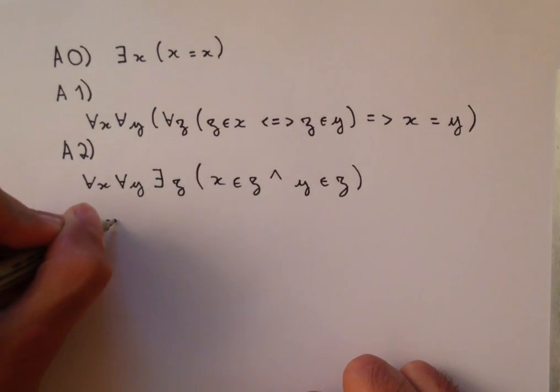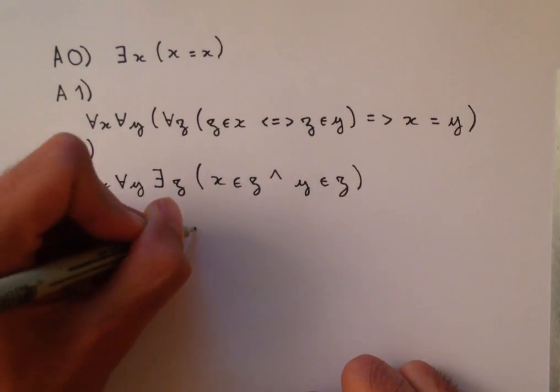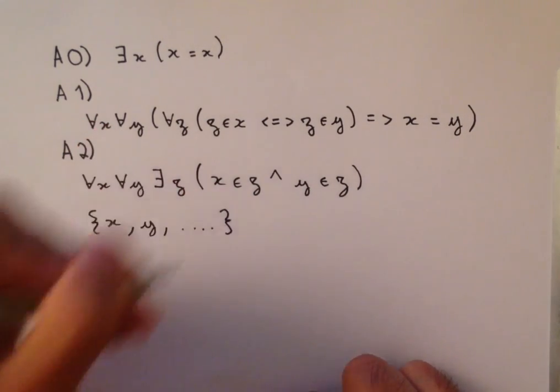So here we're saying you take any two sets x and y, and there's some other set z such that x is in it and y is in it. So our set z is going to look something like this. It's going to have x in it, it's going to have y in it, and it might have some other things in it. Our axiom doesn't tell us whether it does or doesn't. So this is what our set is going to look like.